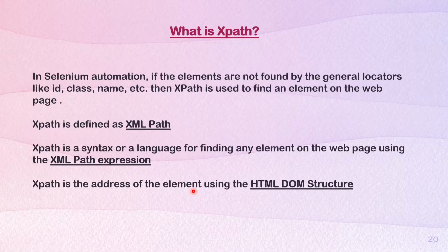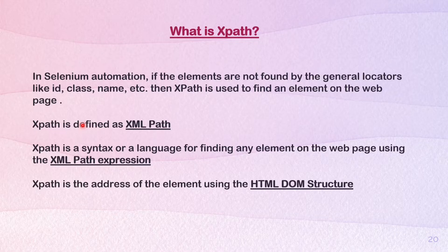In Selenium automation, if elements are not found by the general locators like ID, class name, link text, partial link text, or tag name, then XPath is used to find an element on the web page. XPath is also defined as the XML path — the short name of XPath is XML path. XPath is basically a syntax or language for finding any element on the web page using the XML path expression.